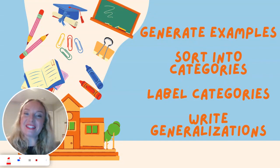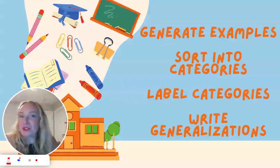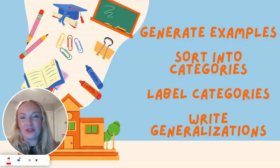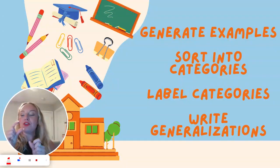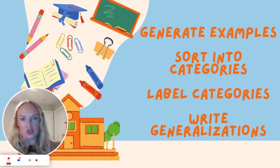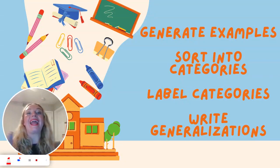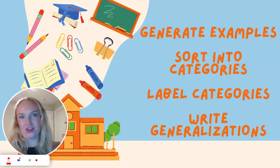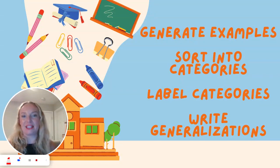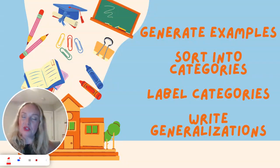Ask students to generate as many examples as possible. For example, if your universal theme is patterns, you say: 'All right, kiddos, you've got three minutes. I'm going to give you lots of little small strips of paper — on each individual strip, I want you to write a different example of patterns.' Just giving students time to generate examples.